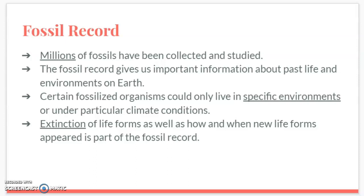When we think about the fossil record, scientists have collected and studied millions of fossils. The fossil record gives us important information about past life and environments on Earth. Certain fossilized organisms could only live in specific environments or particular climate conditions. The fossil record also tells us about extinction of life forms and when new life forms appeared — we can lay fossils out from oldest to youngest and see what types of environments or climate conditions organisms lived in.